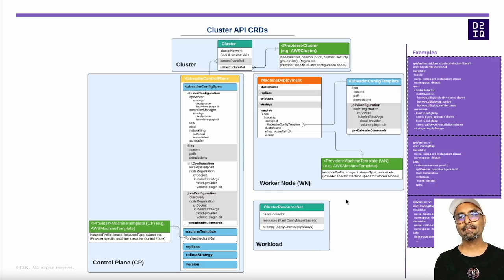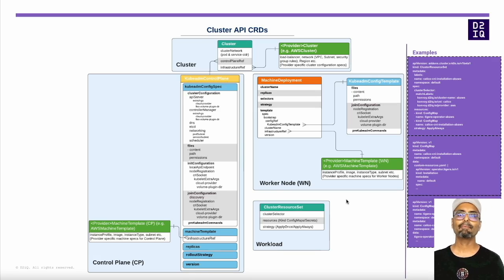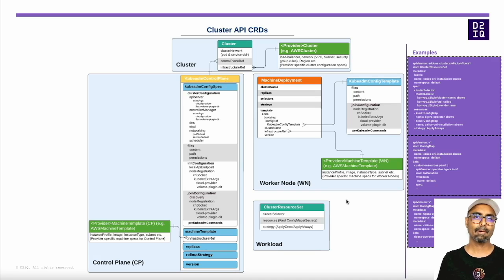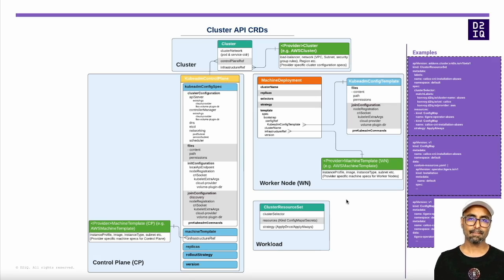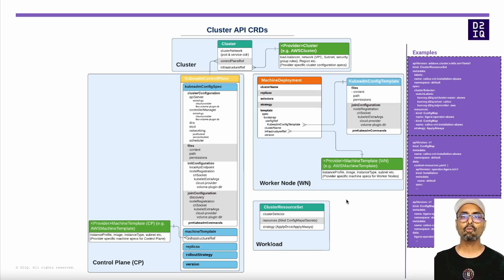The kubeadm config template is used by the kubeadm controller to form the kubeadm config for the worker nodes. This is very similar to the kubeadm config spec defined in the kubeadm control plane resource, except it does not contain the cluster information and init sections, which are only required by the control plane. Finally, the workload category currently has the cluster resource set CRD, which lets you push workload resources to the target Kubernetes cluster via config map or secrets. Simply define the cluster resource set resource with a reference to a secret or config map containing the Kubernetes manifests to be applied to the cluster.